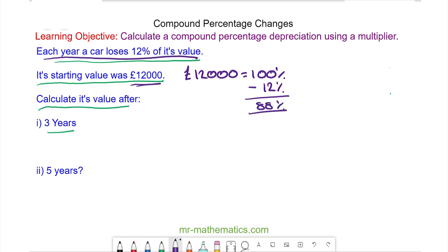Now to calculate a percentage change we need to use a multiplier which involves converting 88% to a decimal. We do this by dividing it by 100. So we have 0.88 and this is our multiplier.